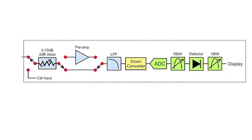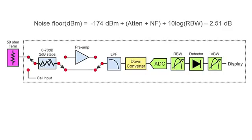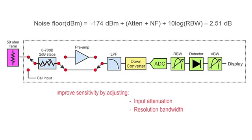First, let's take a look at a simplified block diagram showing a typical signal analyzer with the analyzer's input terminated in a 50 ohm load. The equation on the top shows the parameters used for calculating the noise floor. I will discuss how to improve your sensitivity by making adjustments using the following techniques: input attenuation, resolution bandwidth, pre-amplifier, and using noise floor extension, which is a built-in noise reduction algorithm unique to the X-Series Signal Analyzers.